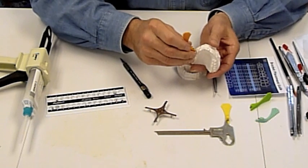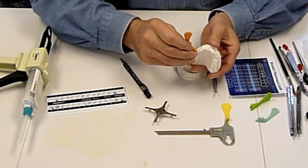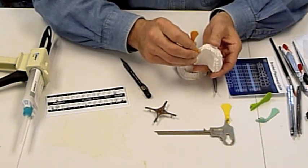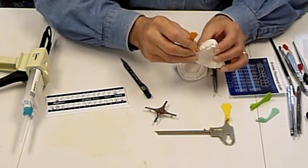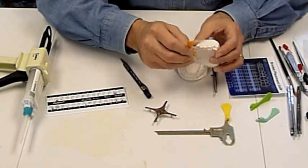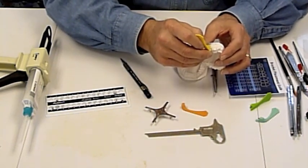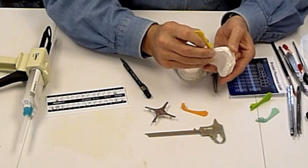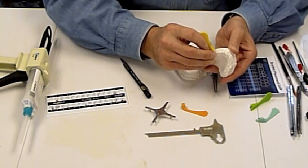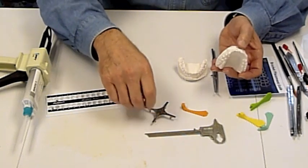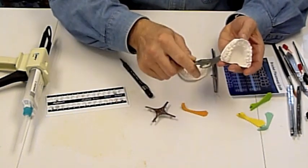You take the gauge for the laterals at four. First bicuspids will be four. The second bicuspids is three and a half, and the molars are at three, which we'll use the boon gauge for.